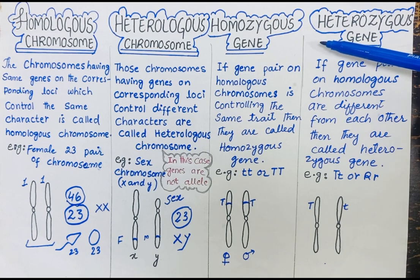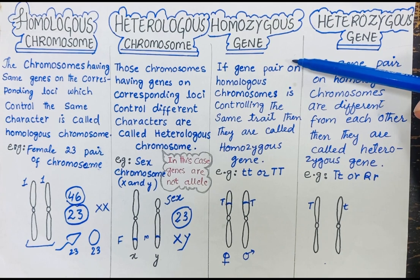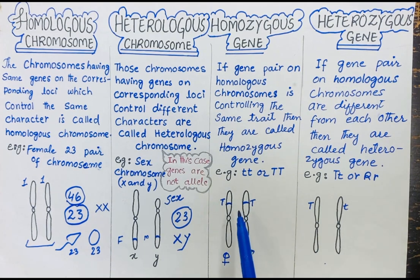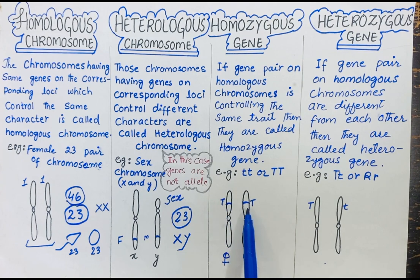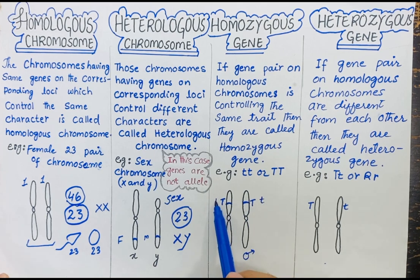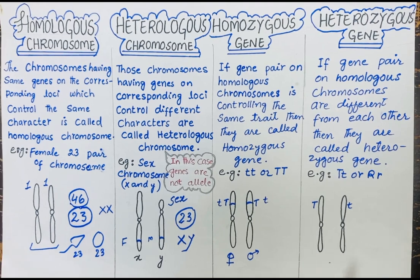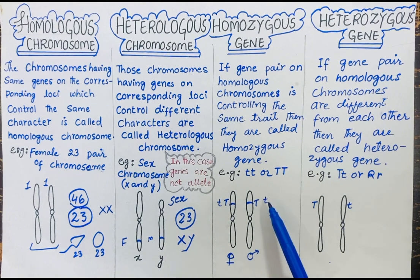So the topic now is homozygous gene. Here I will explain: for example, if a gene controls a character such as height, and the gene coming from the father's side is the same as the gene coming from the mother's side — that is, both alleles are the same — then this gene is called a homozygous gene.